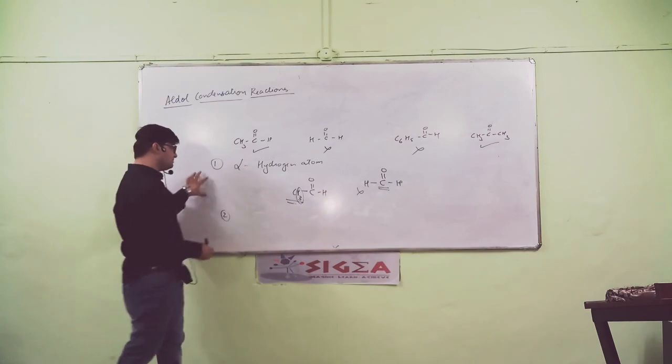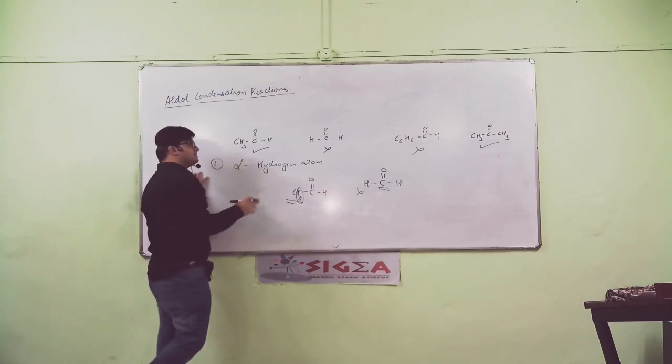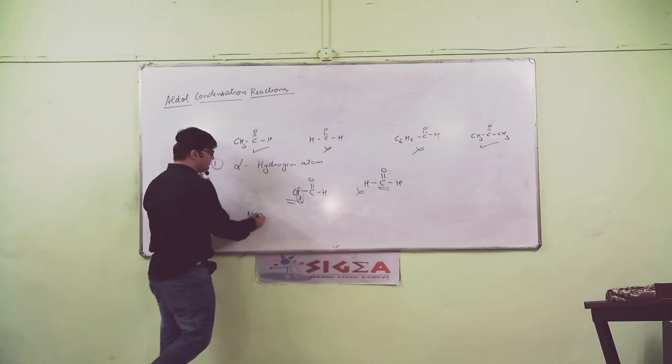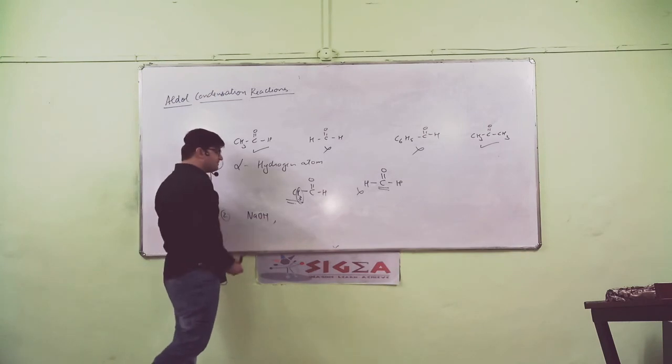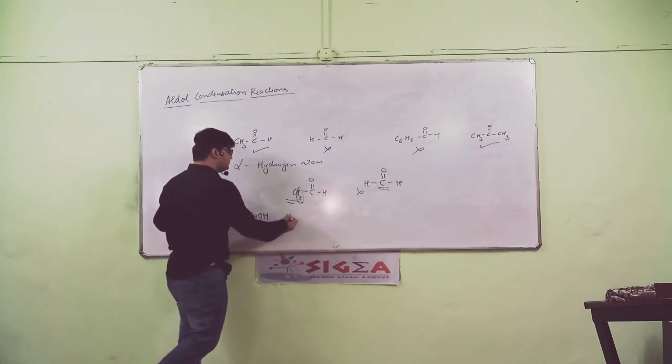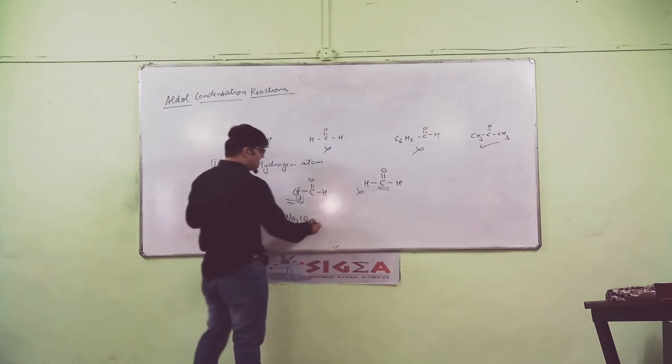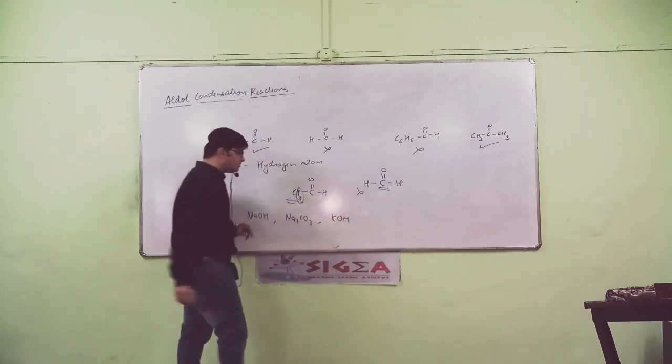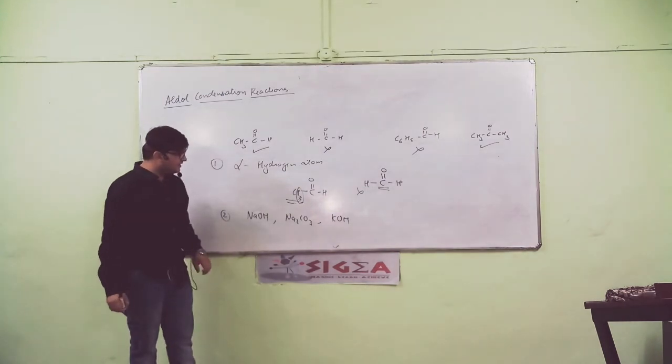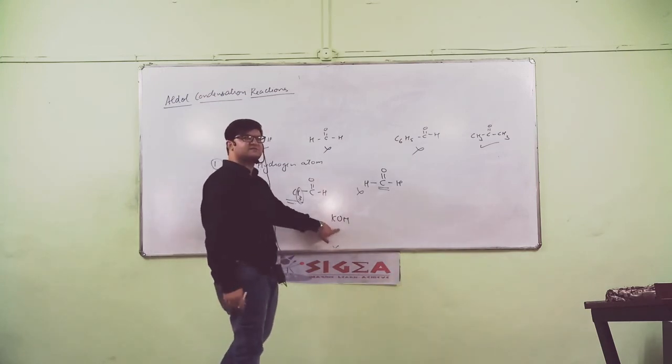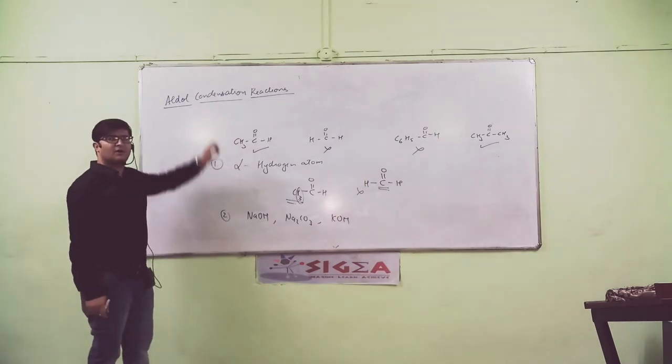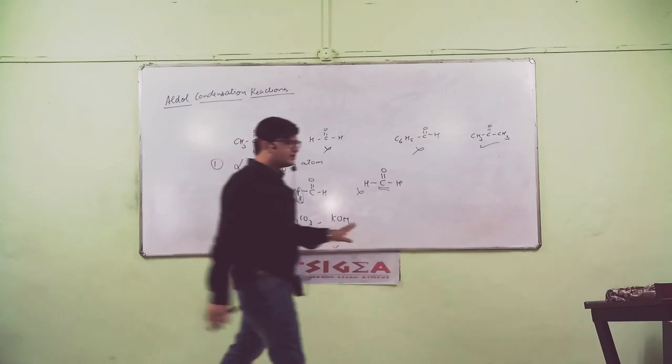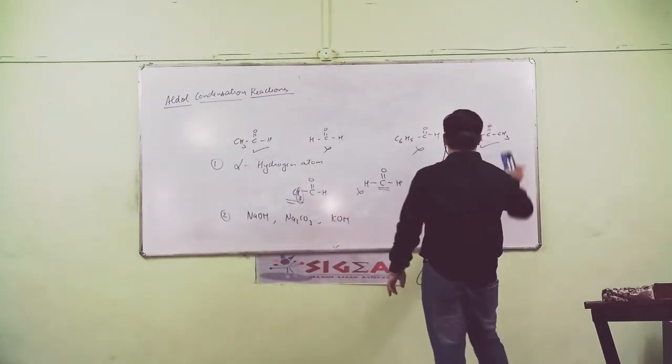The second point is, if there is a compound with alpha hydrogen, you will need to react it in basic medium. The base which is used is NaOH or Na2CO3 sodium bicarbonate, or KOH. So how many reactions do we have? We are going to study Aldol Condensation reactions.